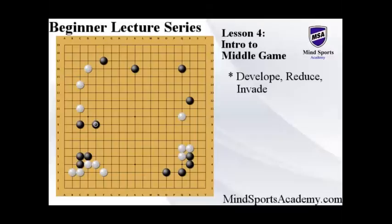In this example, we are in middle game for sure, but how do we know that? We know that because there's no more open corners and there's no more open sides. The bottom can be argued as an open side, however, with both stones on the third line, it's pretty settled and hard to continue on the bottom. So, the middle game is when there's no open corners and no open sides — it's now time to go into the middle game where we develop, reduce, or invade.